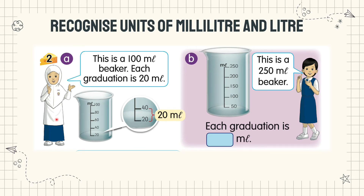The girl says: this is a 100 ml beaker. Each graduation is 20 ml. Ini ialah bikar 100 ml. Setiap sengatan ialah 20 ml. Apabila kita hendak menyukat isi padu cecair, kita akan menggunakan bikar ataupun silinder penyukat. Garis-garis ini kita panggil graduation ataupun sengatan. Nilai untuk sengatan-sengatan ini ialah 20 ml.